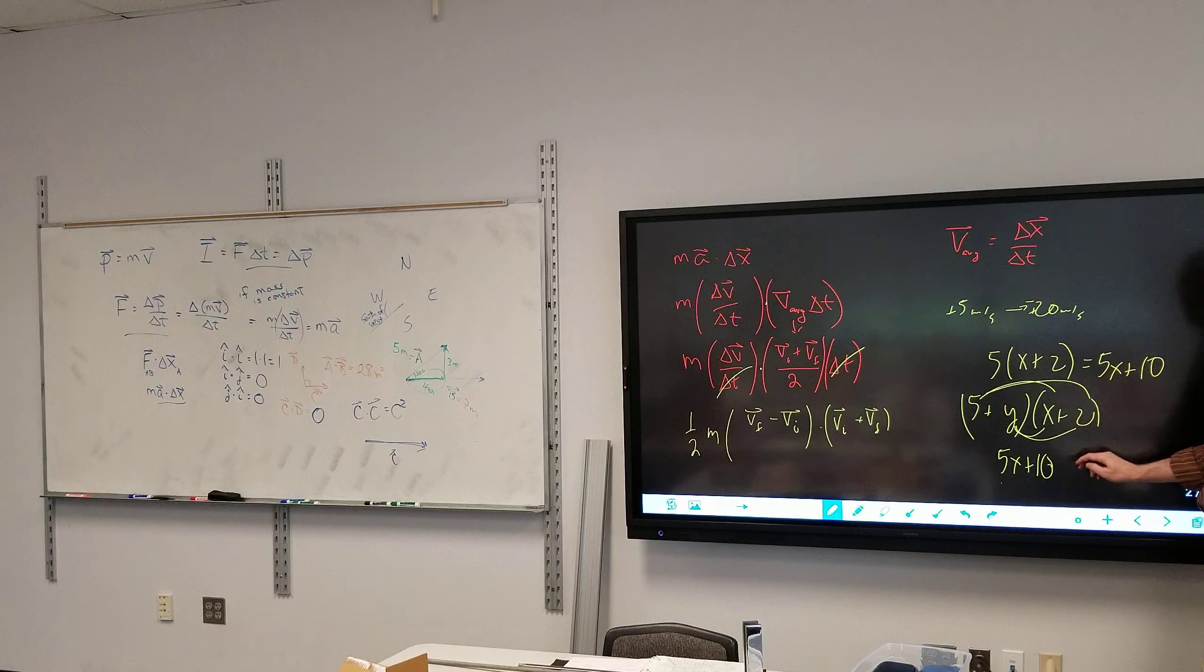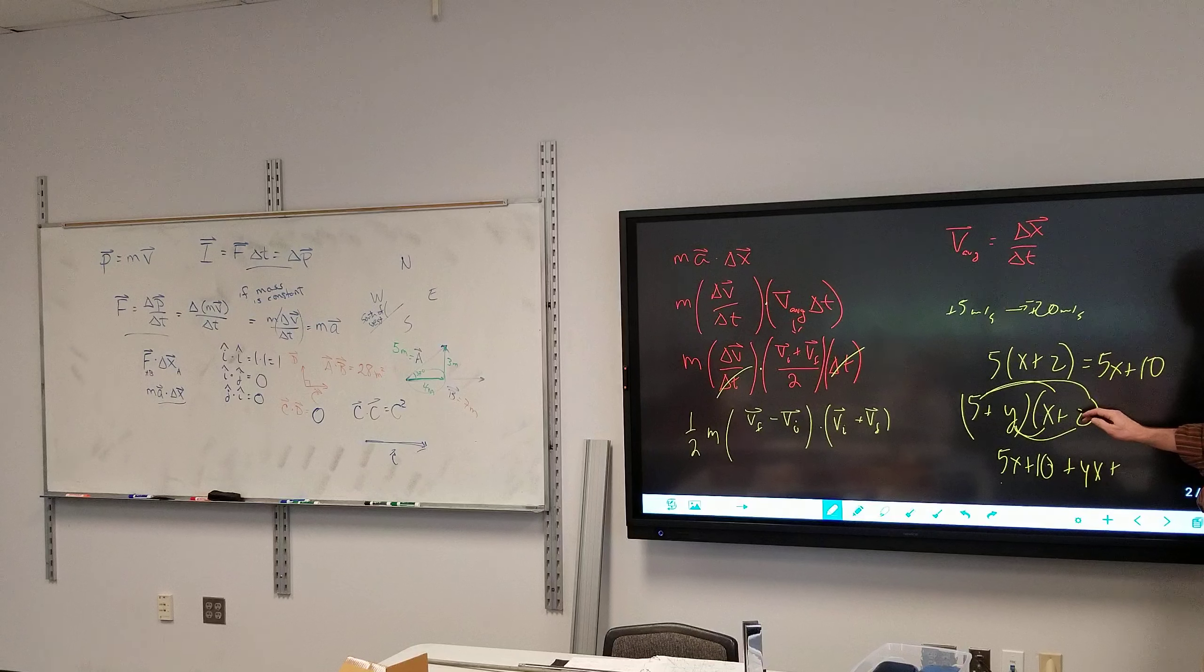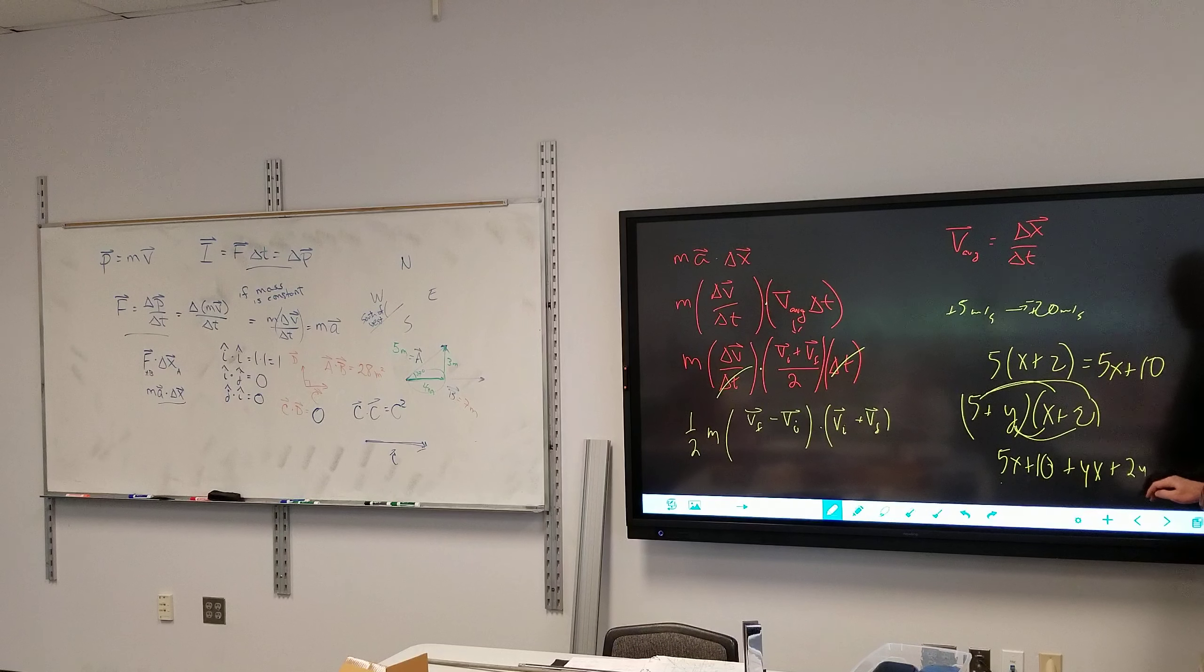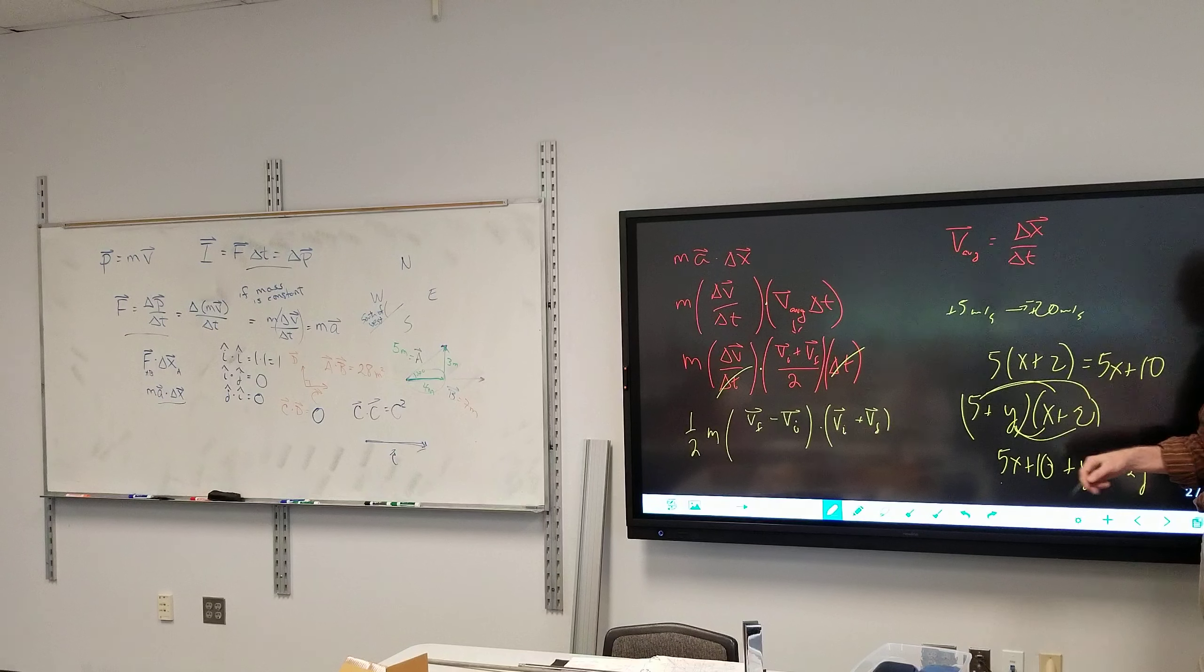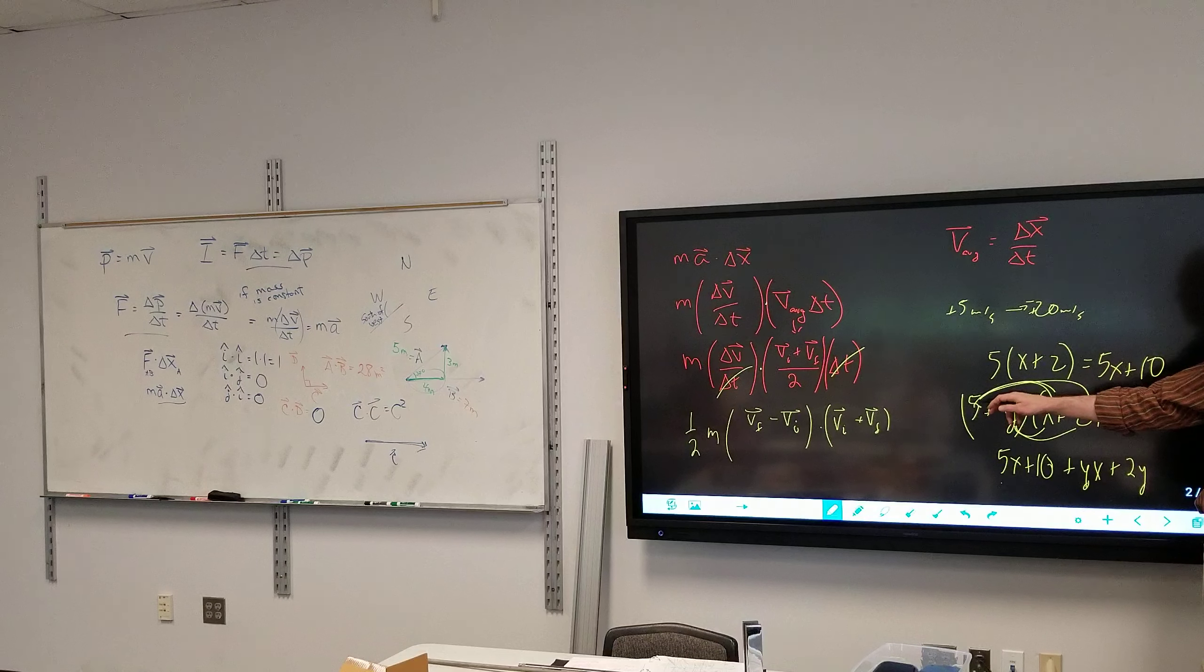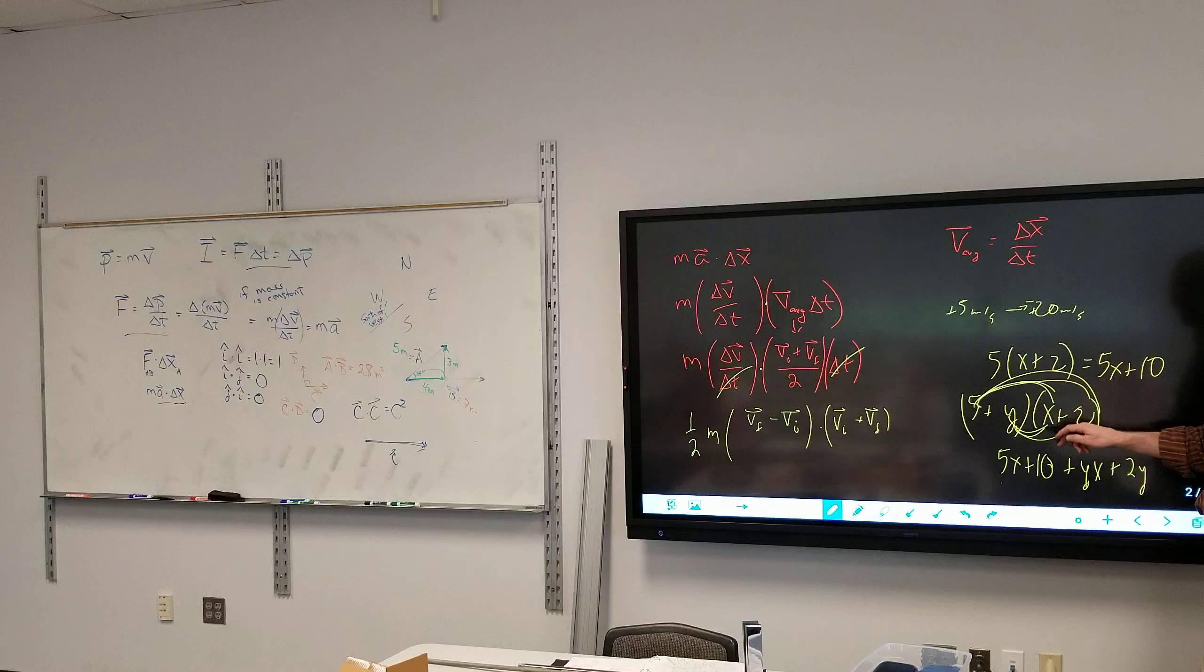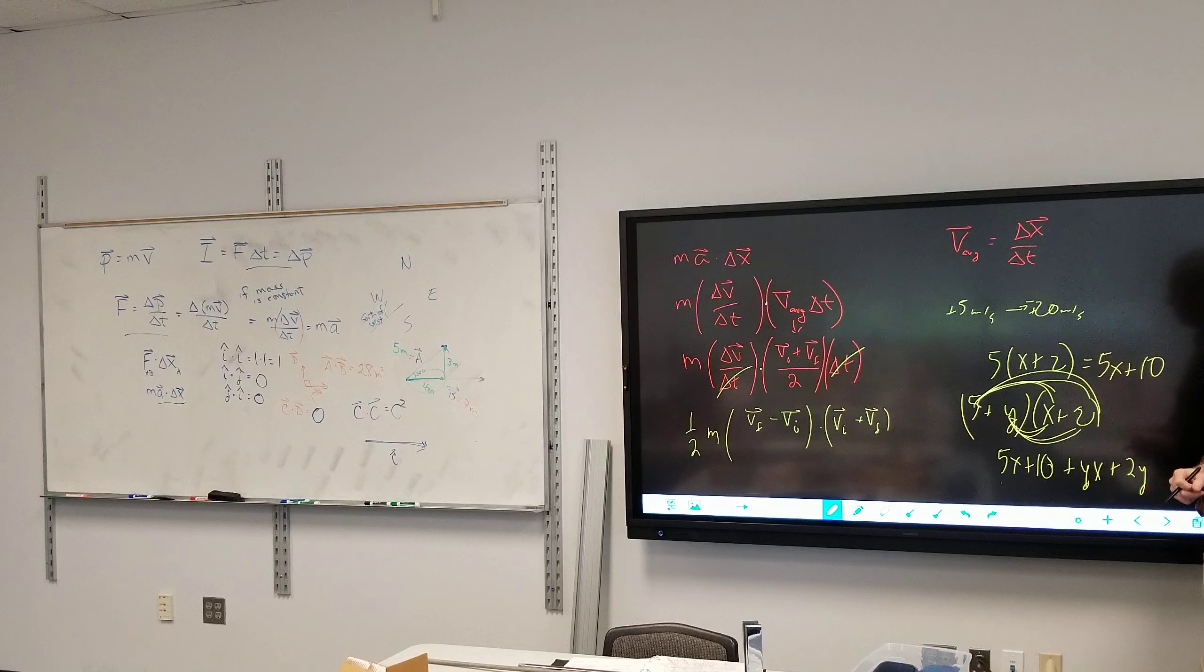And then I do the y parts plus yx plus that's the number 2, 2y. So that's all the FOIL is. For those who don't remember, technically FOIL stands for you multiply the first ones together, then you multiply the outer ones together, then inner, then the last ones.